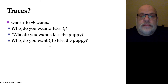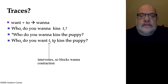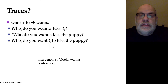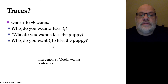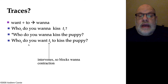One possible explanation for that is because there's a trace there. Our phonology won't let us contract to onto want when there's a trace there. Even when the trace is null and something you can't hear, we as speakers know that something started there. Therefore, we're not going to allow ourselves to collapse want and to. In fact, the grammatical way to say the sentence is "who do you want to kiss the puppy?" — and that's the only grammatical form.